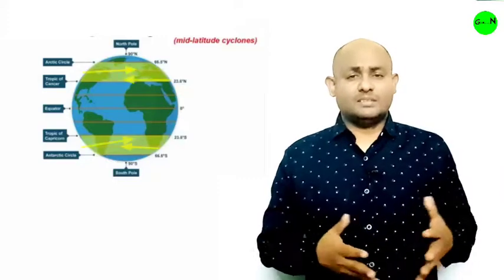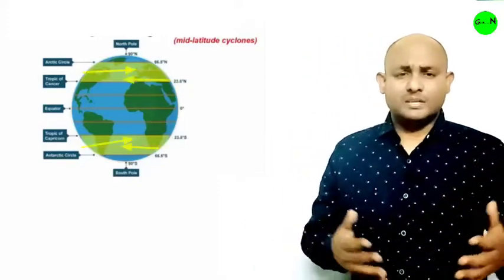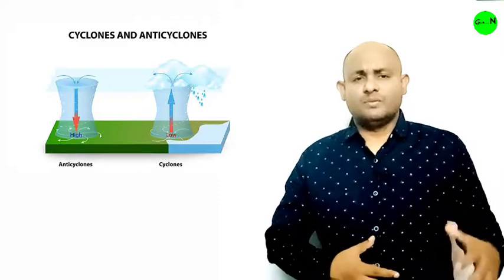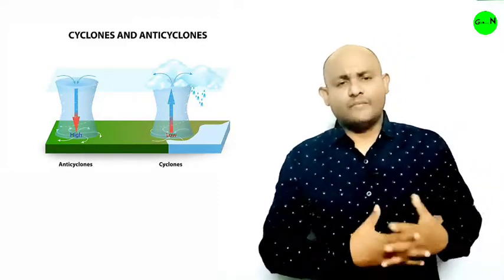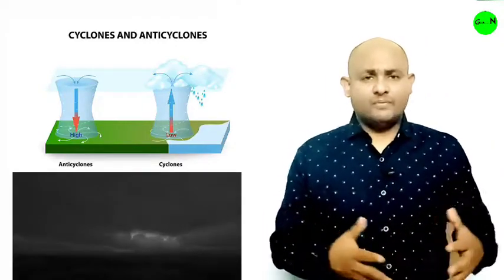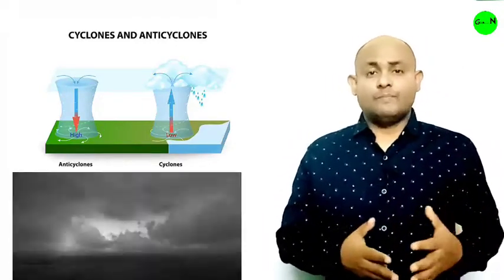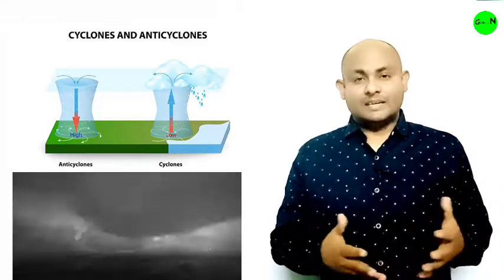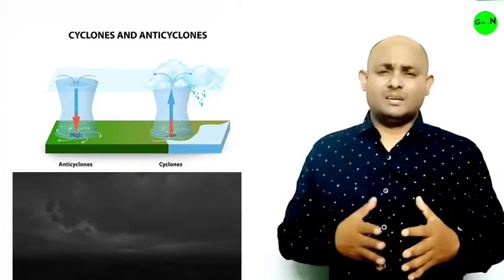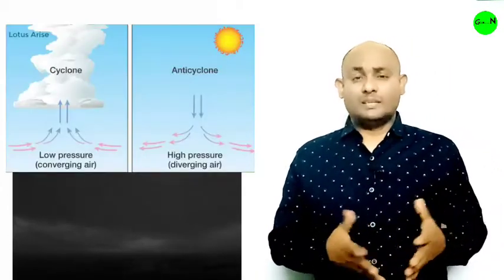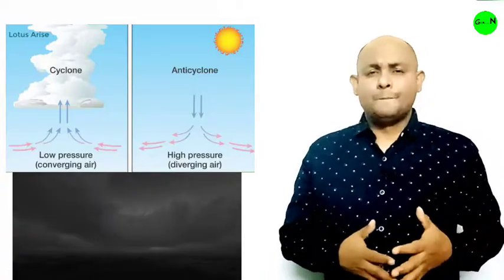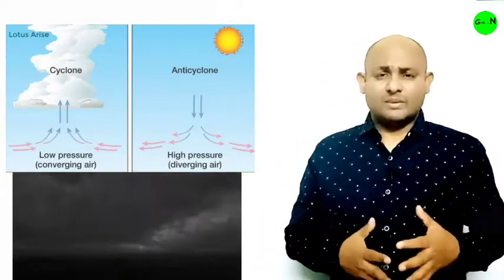An anti-cyclone is the opposite of a cyclone — it has inward spiraling air circulation around a high pressure center. Anti-cyclone winds rotate clockwise in the northern hemisphere around the center of high pressure. Anti-cyclones form above the ground at a high pressure center and generally have fair weather. In a cyclone, pressure is low; in an anti-cyclone, pressure is high. Wind direction can be clockwise or anti-clockwise depending on the hemisphere.